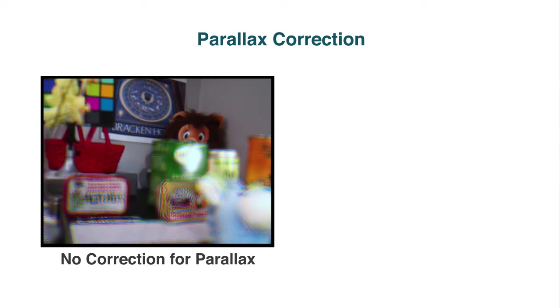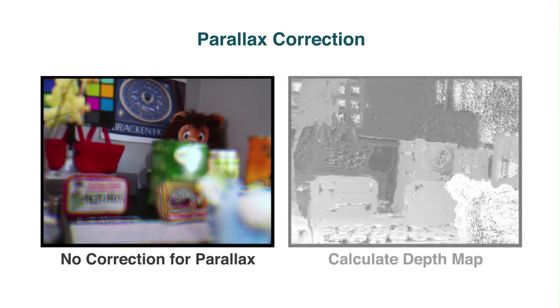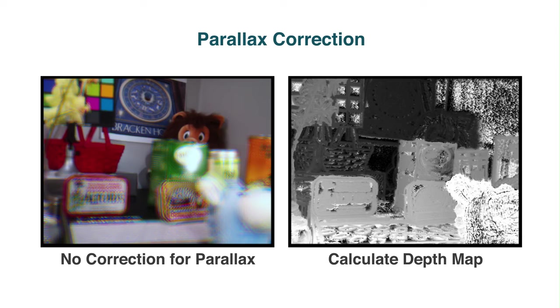In order to form a final high-resolution image, we must correct for the differences in parallax among all the cameras. On the left, we show the resulting image if parallax is not corrected — the final reconstructed scene will have significant artifacts. Therefore, we must compute a depth map, shown on the right, to determine the depth of objects in the scene. With this depth map, we can correct for the parallax and generate a consistent reconstructed image.